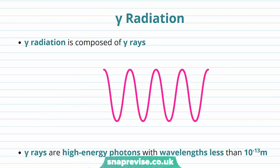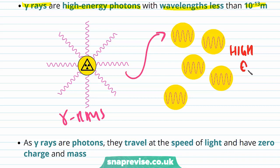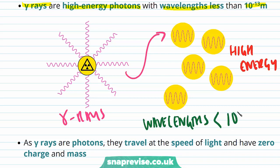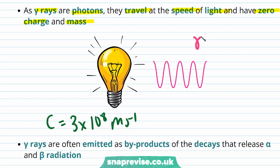The third and final type of ionising radiation we're going to discuss is gamma radiation. Gamma radiation is composed of gamma rays. Gamma rays are high-energy photons with wavelengths that are less than 10 to the minus 13 metres. As gamma rays are photons, they travel at the speed of light — c, equal to 3 times 10 to the 8 metres per second — and have zero charge and zero mass, unlike beta radiation and alpha radiation.